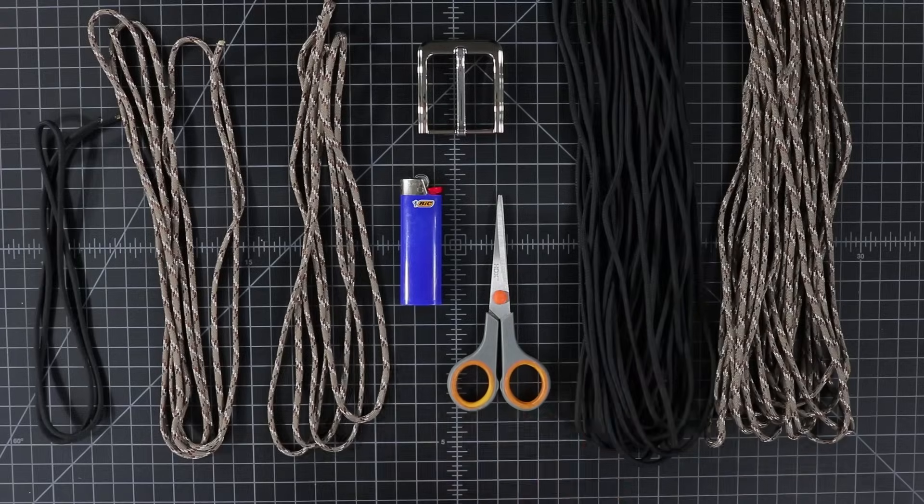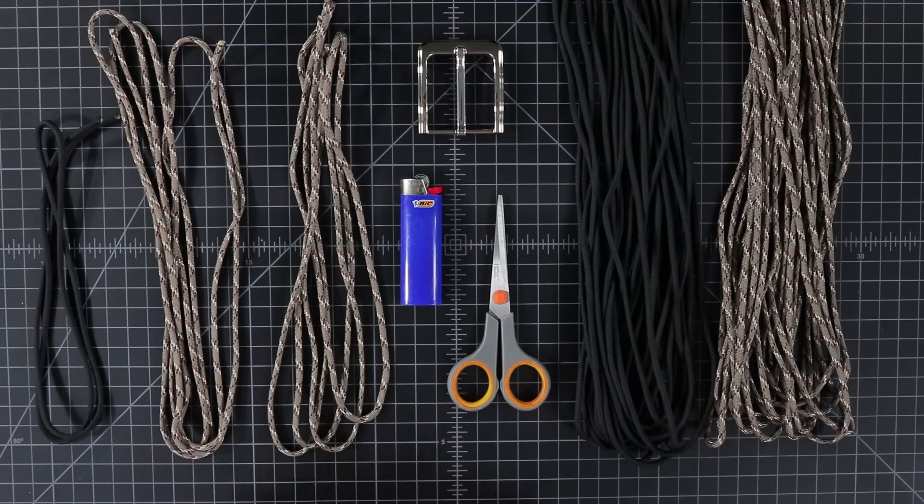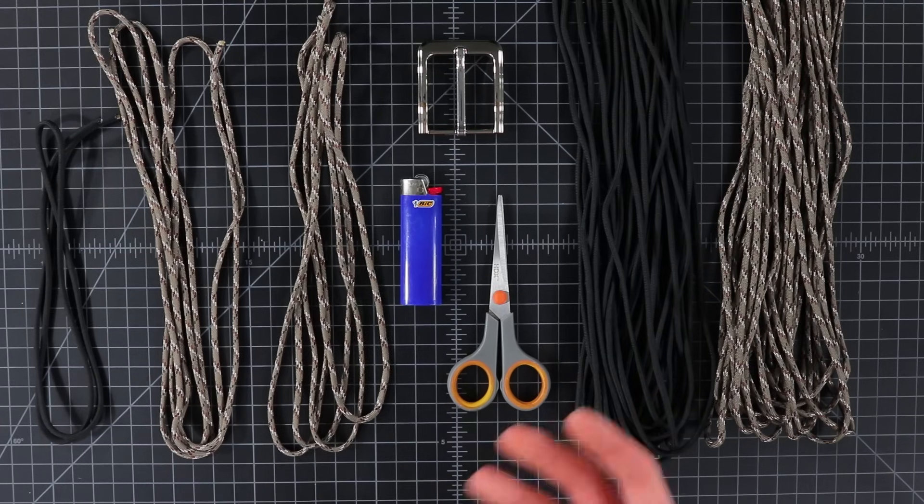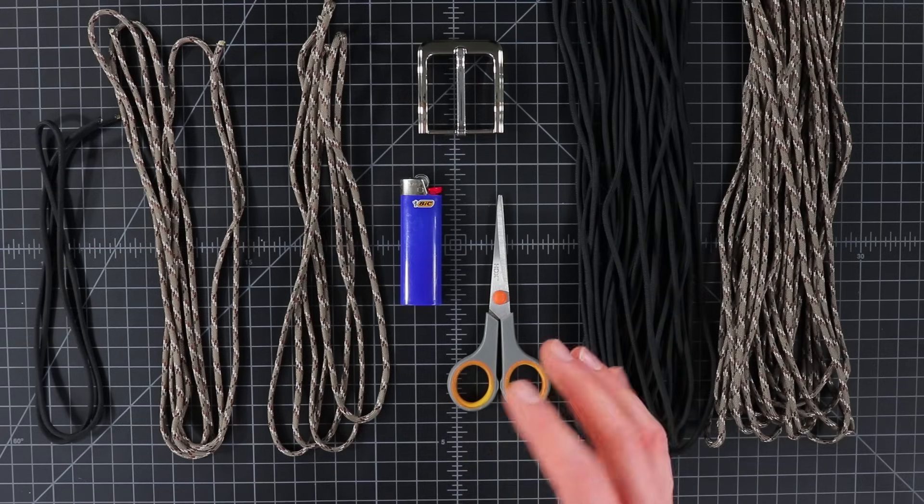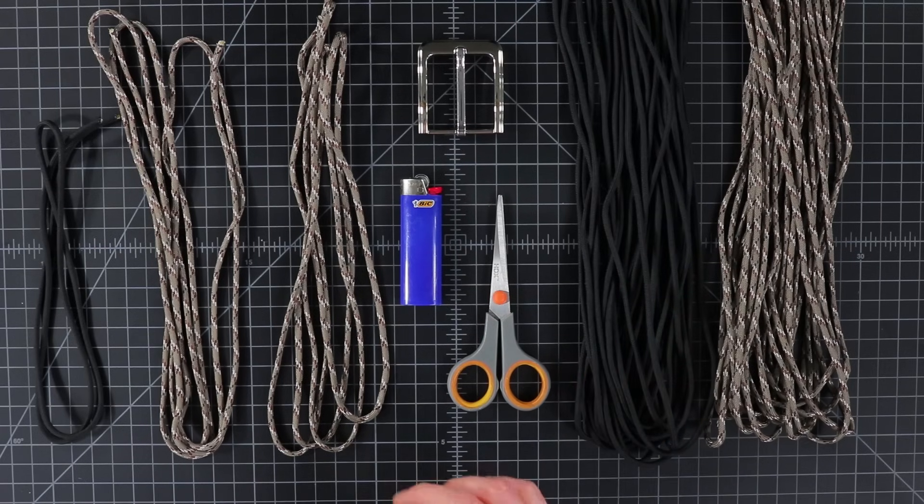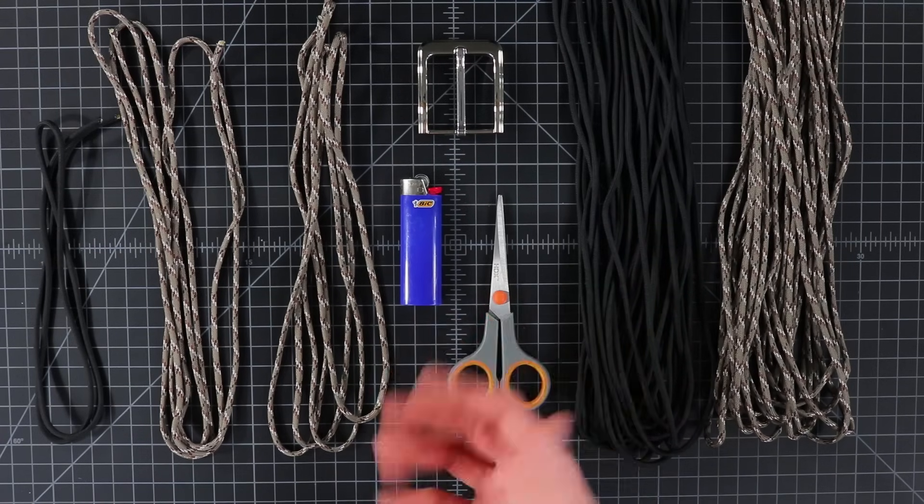The length requirements for paracord on this project are gonna vary a little bit depending on your waist size. I'm operating off of a 34 inch waist that I'm building this belt for, and so we're gonna need about 120 feet of paracord total.